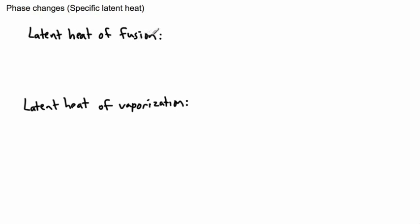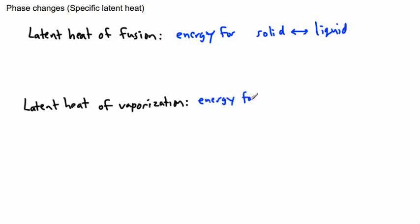We have latent heat of fusion — that's the energy when you go from solid to liquid, or liquid to solid. So solid to liquid and back again. Whereas latent heat of vaporization is the energy for liquid to gas — that's boiling — or gas to liquid, which is condensation. So fusion covers melting and freezing, while vaporization covers boiling and condensation.